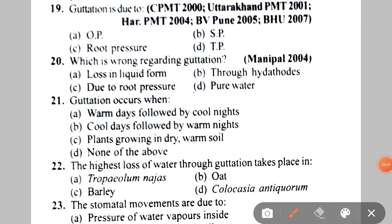Next: guttation is due to A. Osmotic pressure, B. Suction pressure, C. Root pressure. The correct answer is C — root pressure.